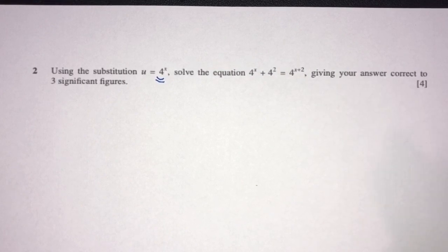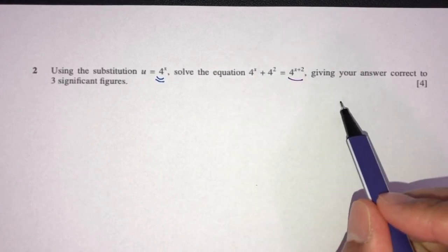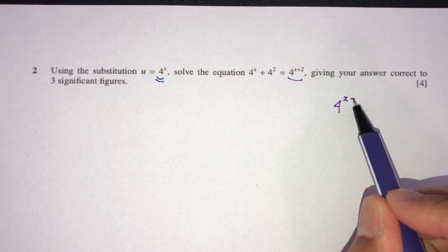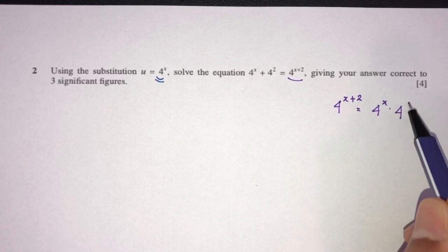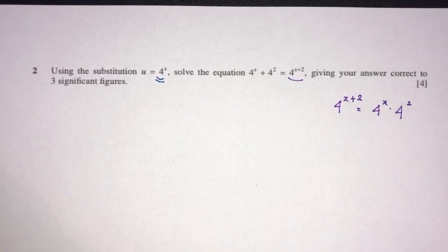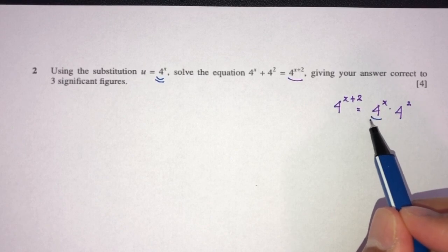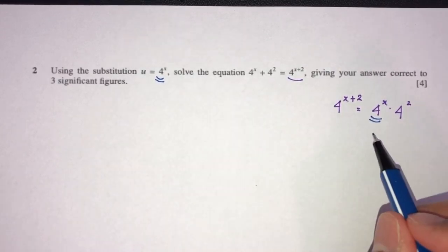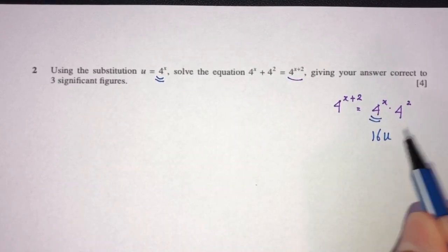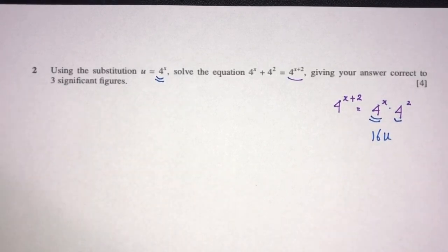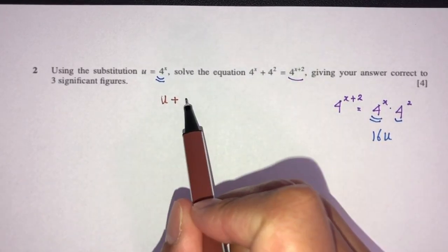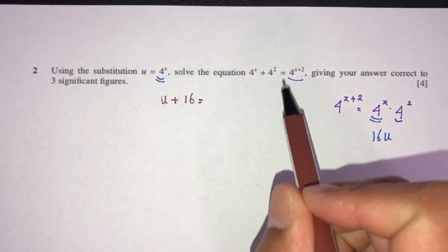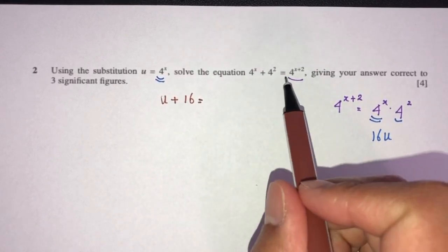We have to use the laws of indices. For example, 4 to the power x plus 2 is equal to 4 to the power x times 4 to the power 2. Now the question is asking me to change this to u, so that should become 16u, since 4 to the power 2 is 16. Now we can try to simplify this whole thing one by one. So here we have u plus 16 equal to 16u.